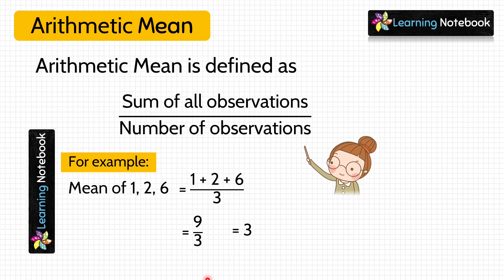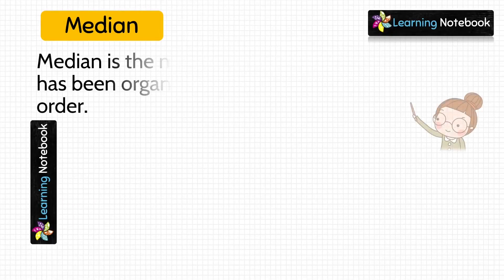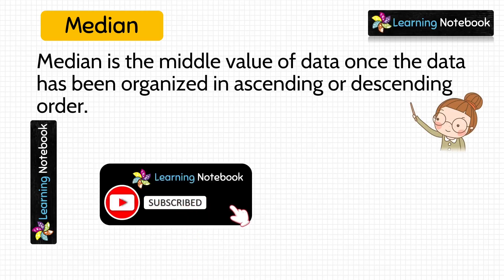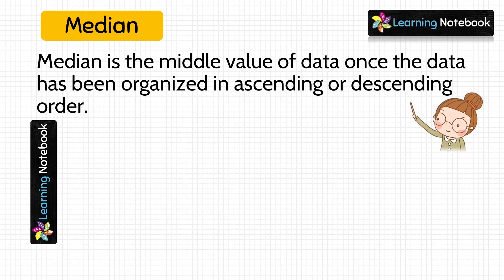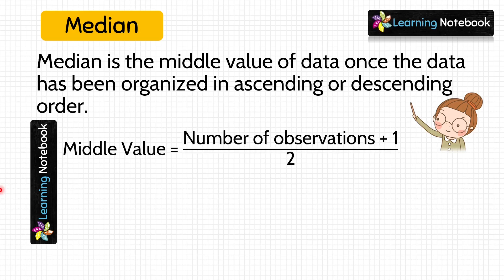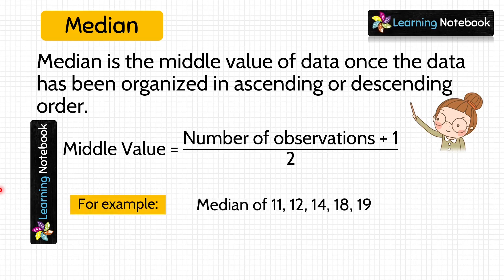Next is median. Median is the middle value of the data once the data has been organized in ascending or descending order. The middle value is equal to the number of observations plus 1, divided by 2. For example, we have to find the median of 11, 12, 14, 18, and 19.